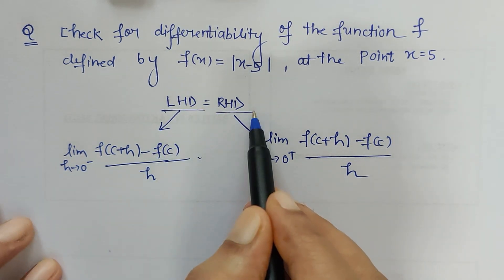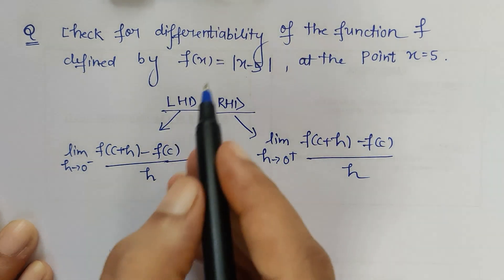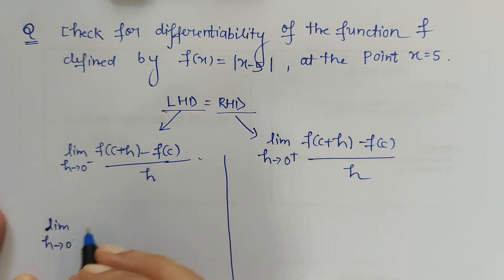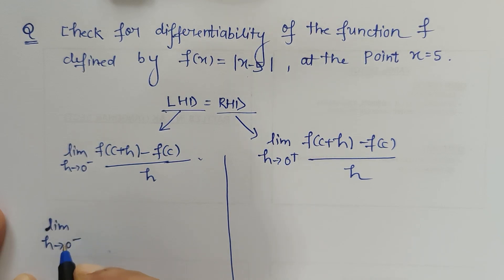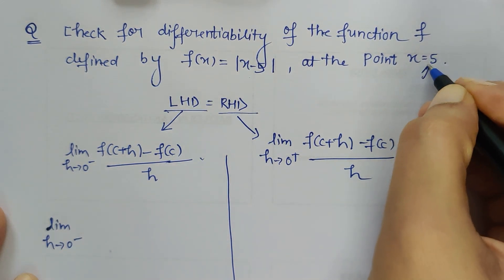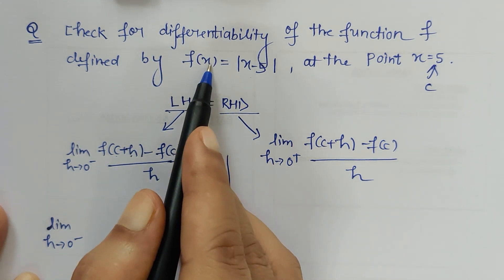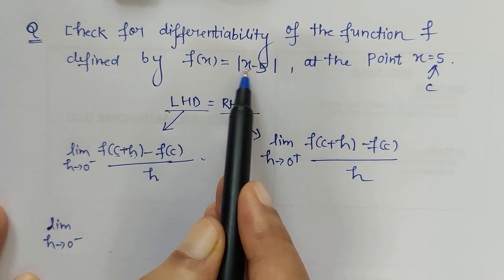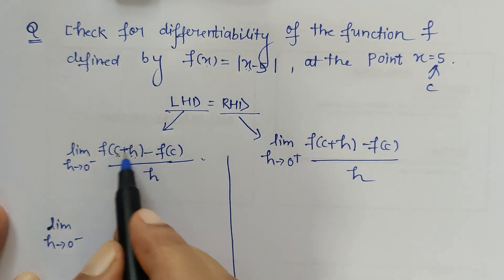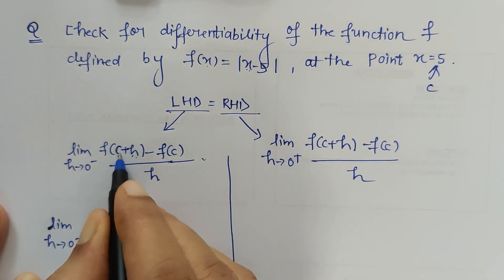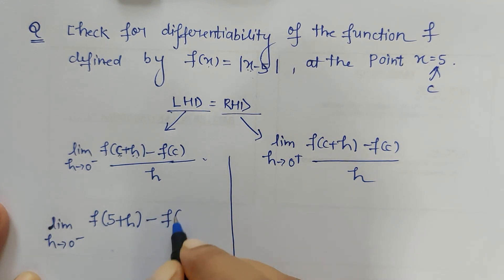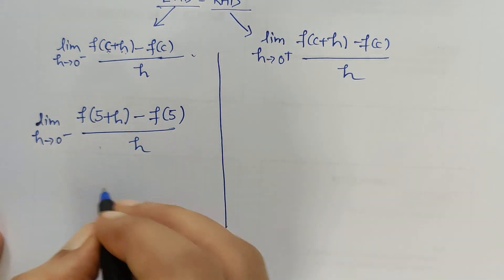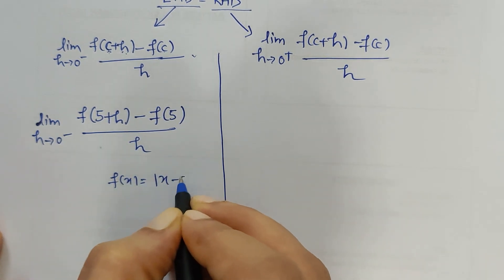For this particular function, let's find the left hand derivative and right hand derivative separately. Finding the left hand derivative for the mod x minus 5 function: limit h tending to 0 minus. Here the value of c is 5, so c plus h means wherever we have x we put 5 plus h. So rewriting with c equal to 5, we substitute 5 plus h in place of x. The given function is f(x) = |x - 5|.